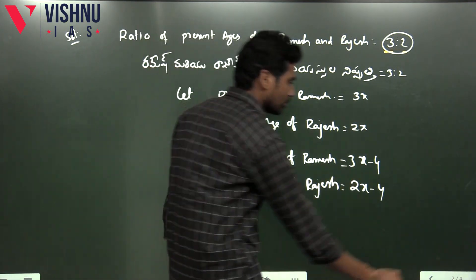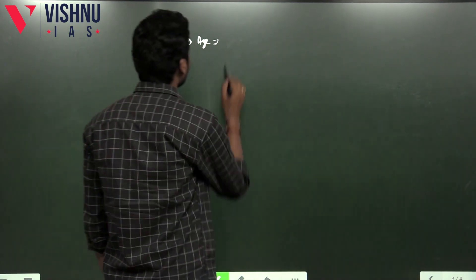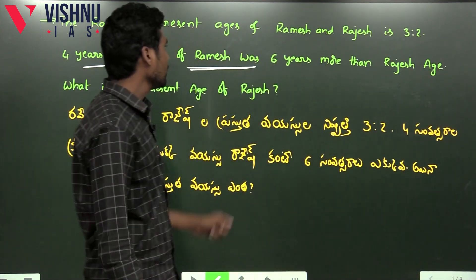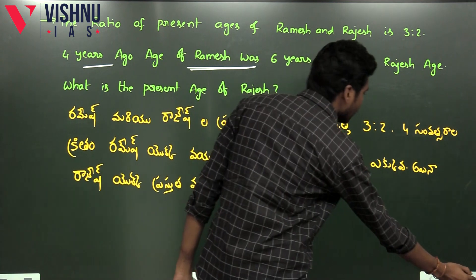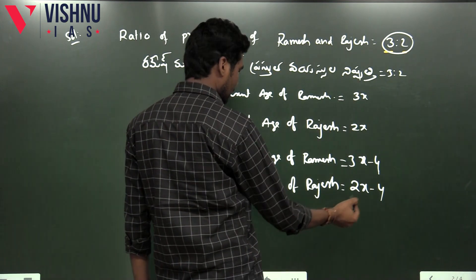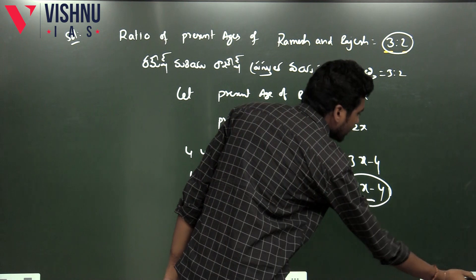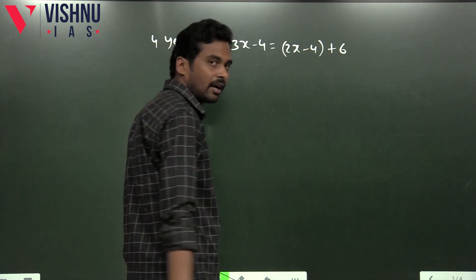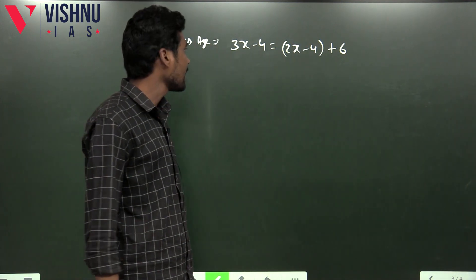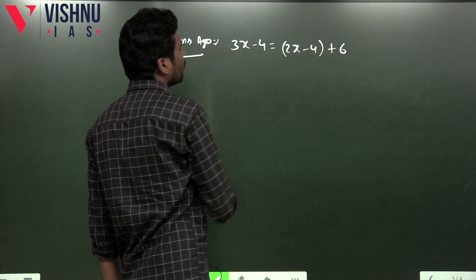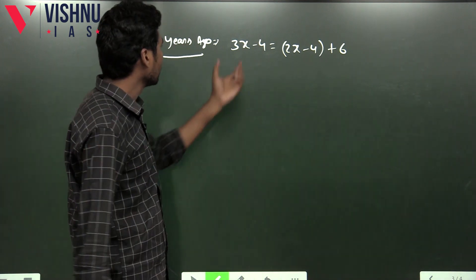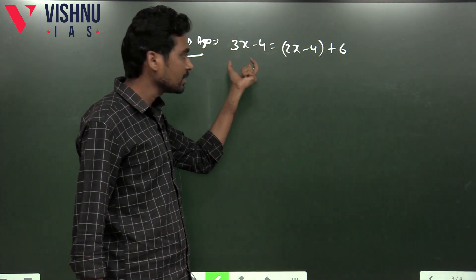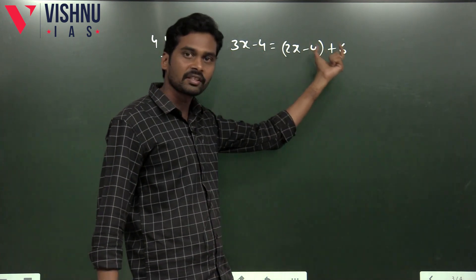Four years ago, Ramesh is 3x minus 4. So you write: 3x minus 4 is equal to 6 years more than Rajesh. 6 years more than Rajesh means: four years ago, Rajesh is 2x minus 4. So the equation is: 3x minus 4 is equal to 2x minus 4 plus 6.